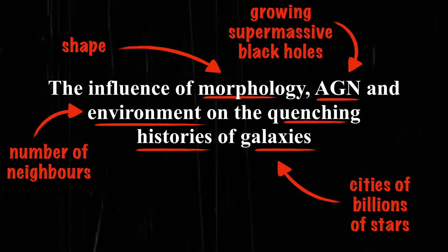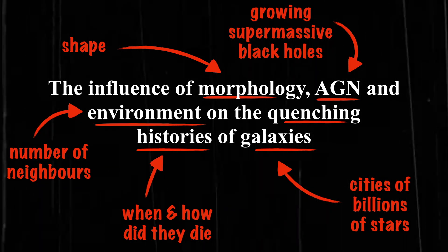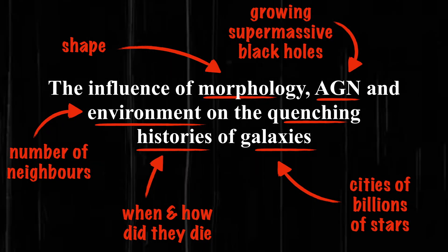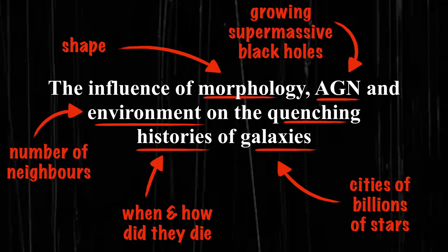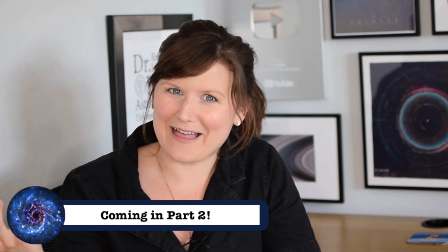Then we've got this term 'quenching history'. Quenching is essentially the word we use to mean stop forming stars. So quenching history is looking at how many stars a galaxy has been forming throughout its entire lifetime, and specifically if it has ever stopped forming stars and is no longer forming any new ones. So essentially my thesis was about how the shape, the supermassive black hole, and the environment of a galaxy could somehow stop it from forming stars - or, as a YouTube title: how do black holes kill galaxies?